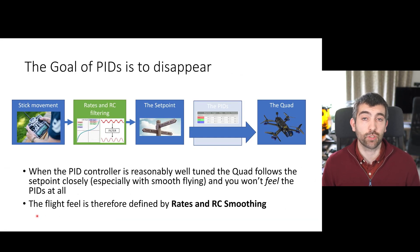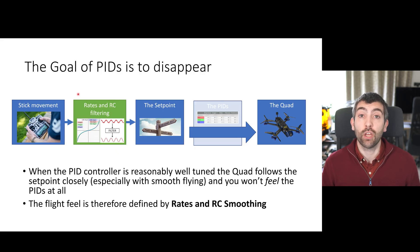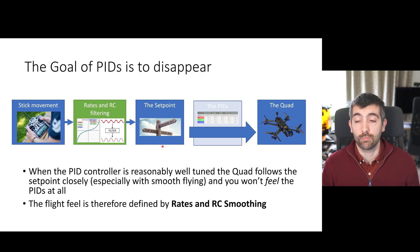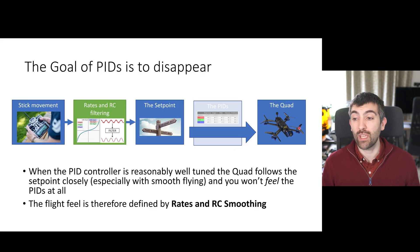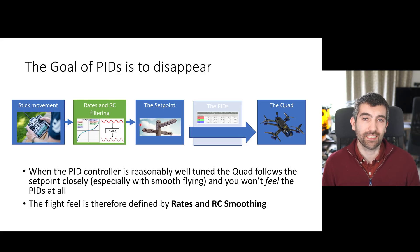Before we talk about tuning your rates and RC filtering, I wanted to give you an overview of where these things fit into the whole control flow in Betaflight. Everything starts with your stick movement. When you move the stick you're giving an input to the quad, and that input is transmitted by your radio to the receiver in your quad, and the receiver passes it on to the flight controller. Betaflight then applies rates and RC filtering to that RC command input to give a set point — that's what Betaflight thinks you want the quad to do. The PID controller is responsible for making the quad do exactly what the set point says, and with a good PID tune the difference between the movement of the quad and the set point will be very small. This means that rates and RC filtering are absolutely vital to getting the right stick feel.